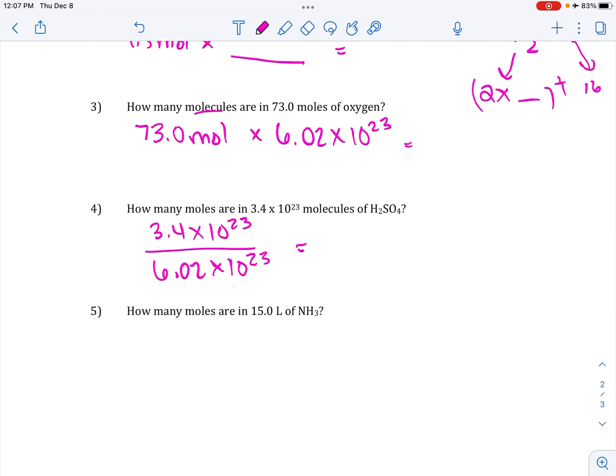Finally, how many moles are in 15 liters of NH3? So liters, that's our last kind of relationship between moles. Moles in grams would be GFM. Moles in particles would be Avogadro's number. Moles in liters would be the molar volume, which is 22.4. So liters to moles, we're going to divide.